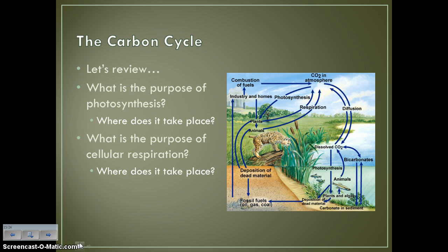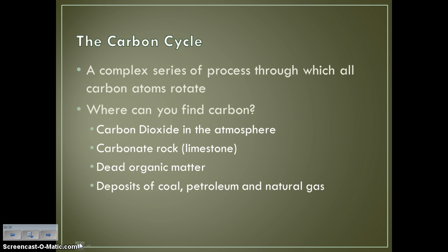Moving on to the carbon cycle. A lot of what I'm saying should be a review to you because it's all about the connection between photosynthesis and cellular respiration. The purpose of photosynthesis is to use energy from the sun to make glucose for the plant — that takes place in the chloroplast. The purpose of cellular respiration is to break down that glucose to produce energy — that takes place in the mitochondria. The carbon cycle is this complex series of processes through which all carbon atoms rotate.